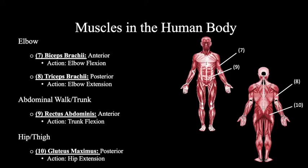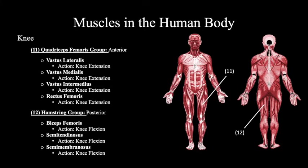There is also just one muscle in the hip and thigh region you are responsible for, and that is the gluteus maximus, or glute max. It is located on the posterior side of the body and responsible for hip extension. Moving on to the muscles in the knee — although there are several muscles, they are grouped into two muscle groups: the quadriceps and the hamstrings. The quadriceps femoris group is located on the anterior side and responsible for knee extension. The hamstring group is located on the posterior side and responsible for knee flexion.